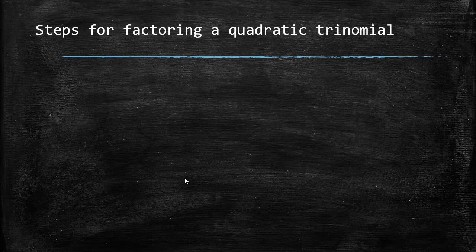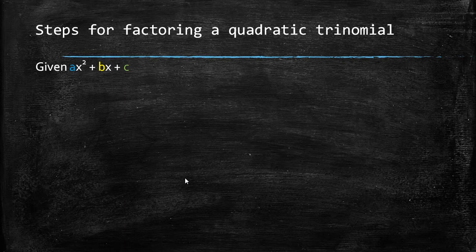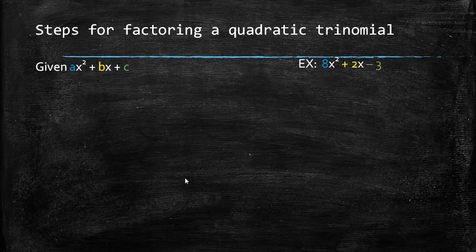So here are the steps for factoring a quadratic trinomial. First, make sure that it's written in standard form ax squared plus bx plus c. We will take a look at this example, 8x squared plus 2x minus 3.